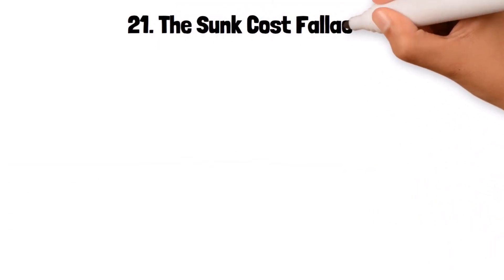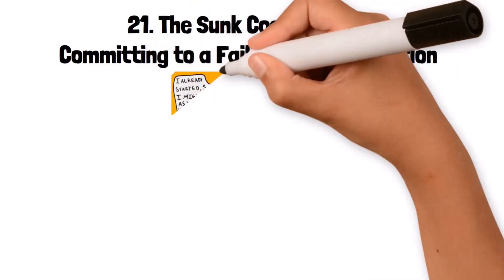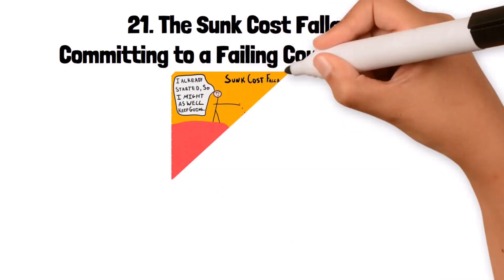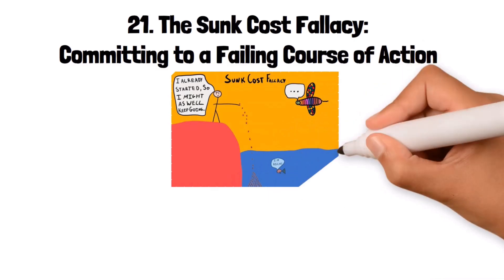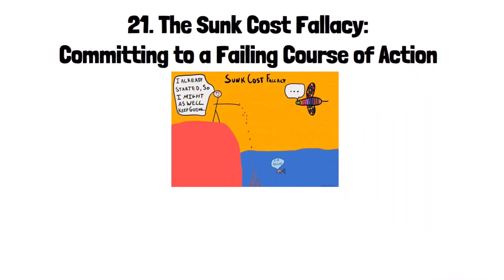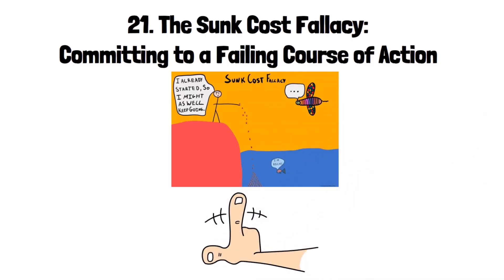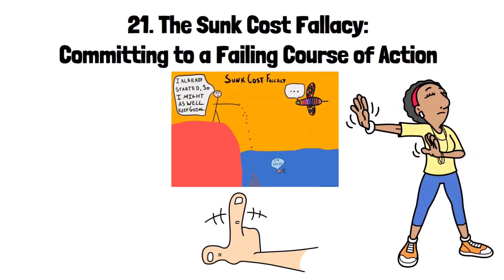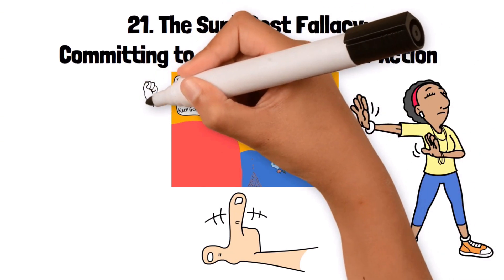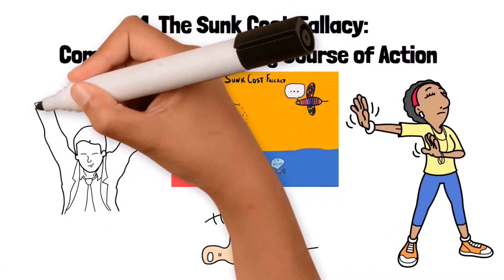21. The Sunk Cost Fallacy is the tendency to continue investing in a project, decision, or relationship based on cumulative prior investment — time, money, or effort — even when it would be more rational to abandon it. This bias is driven by the desire not to waste what has already been spent. For example, someone might stay in a job they dislike because they've already spent years building their career there, even though they would be happier and more successful elsewhere.